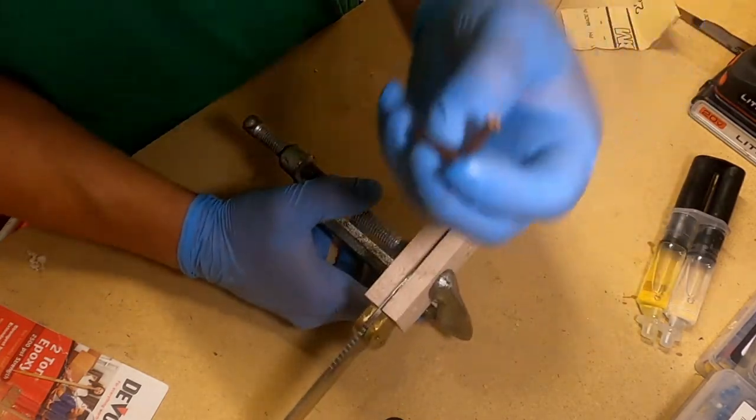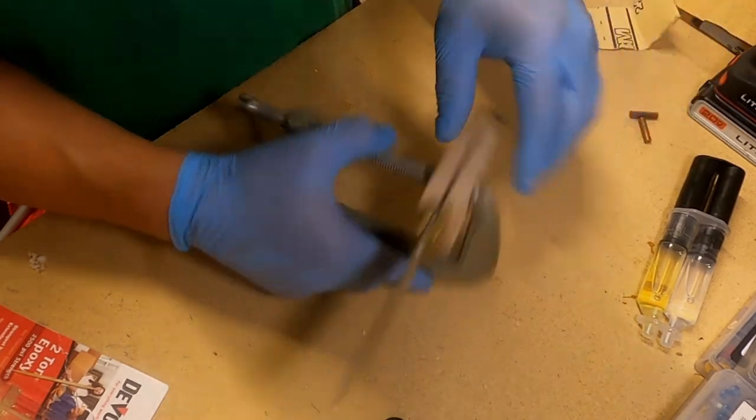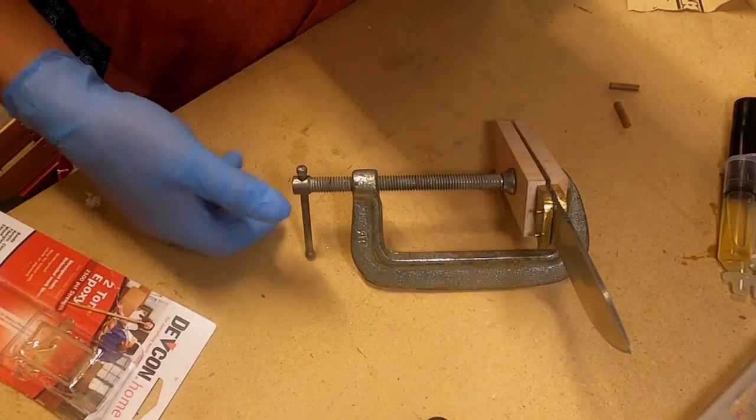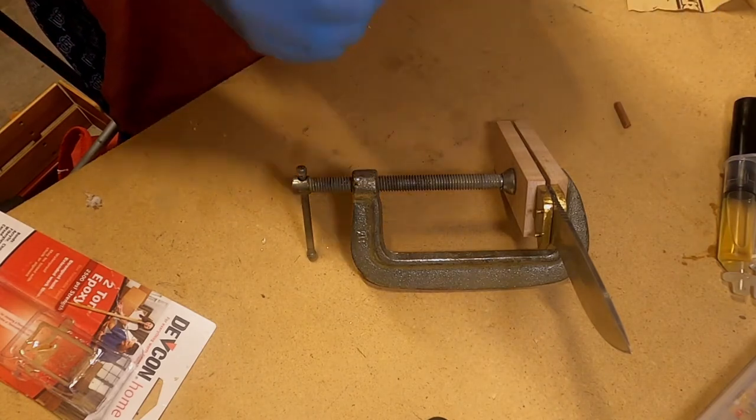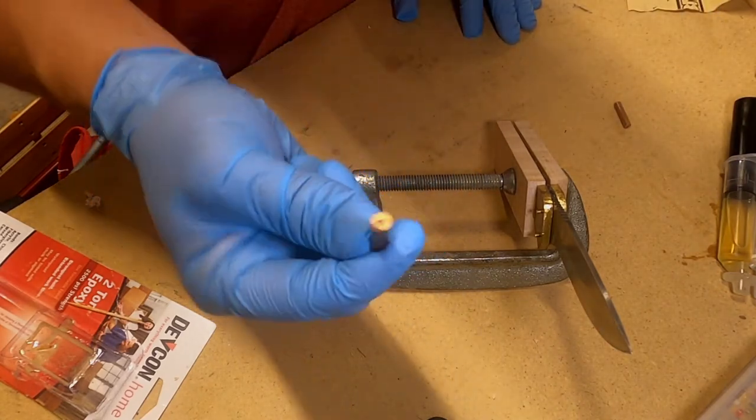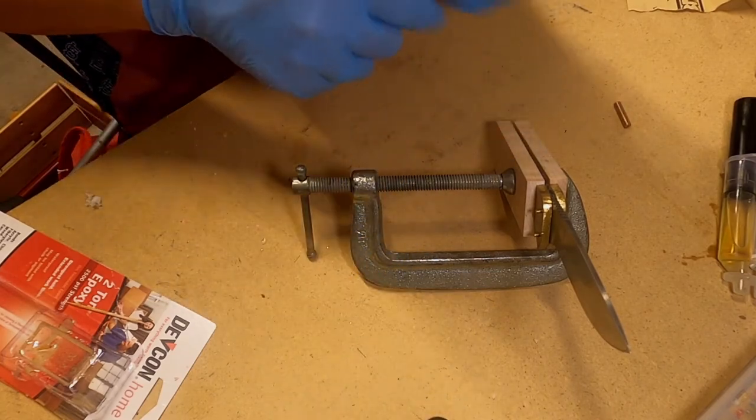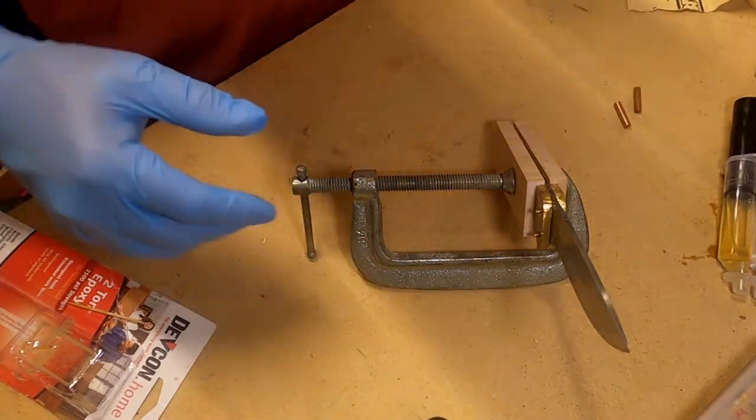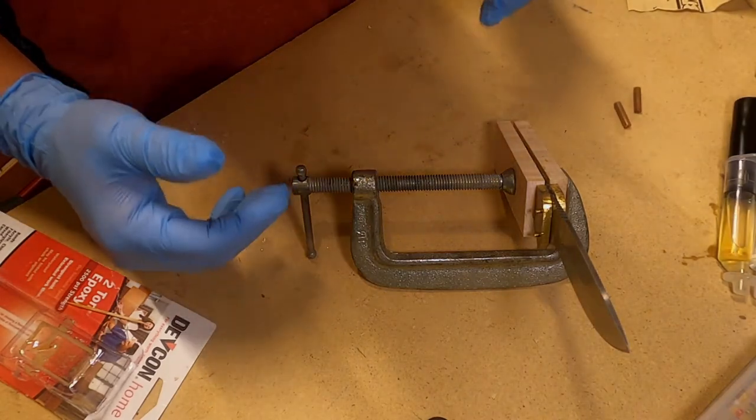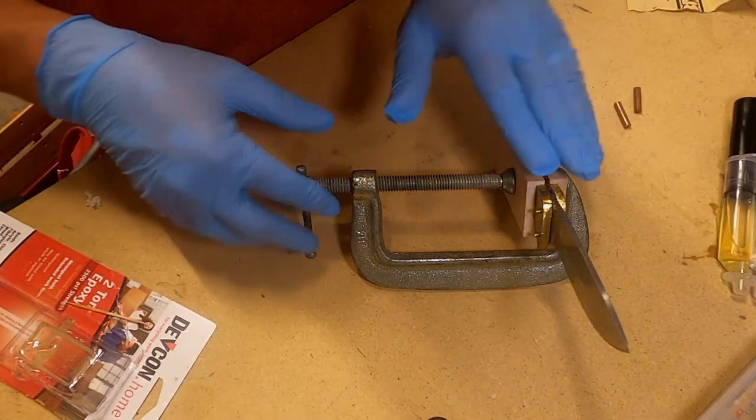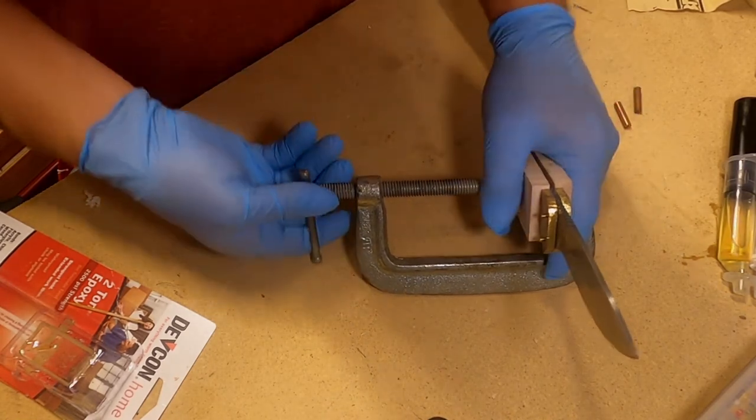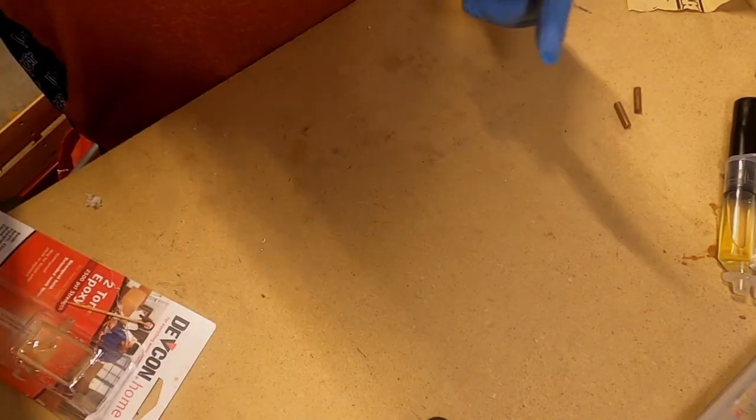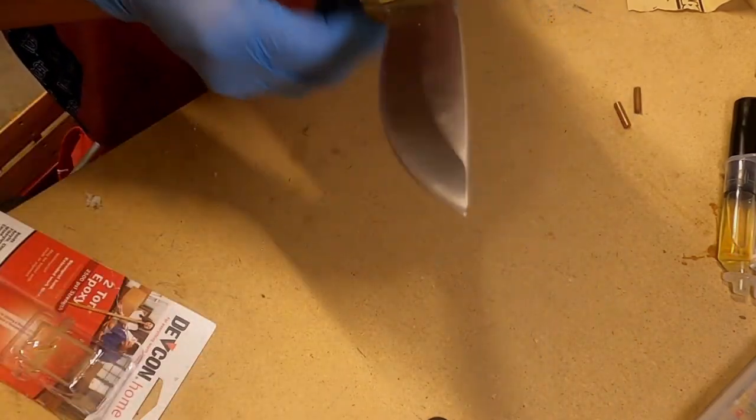It's 8:01 PM. We've got our handle attached firmly. The final epoxy step is going to be to epoxy these pins into the handle. In order to do that, we've got to drill two more holes and then epoxy. We're gonna let that sit overnight, and then tomorrow we'll come back and actually shape the wood. Let's go ahead and get this clamp off and work on drilling the holes.